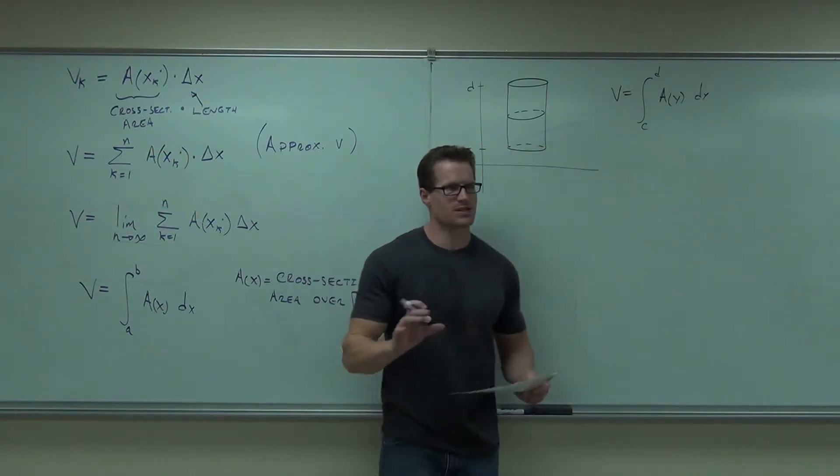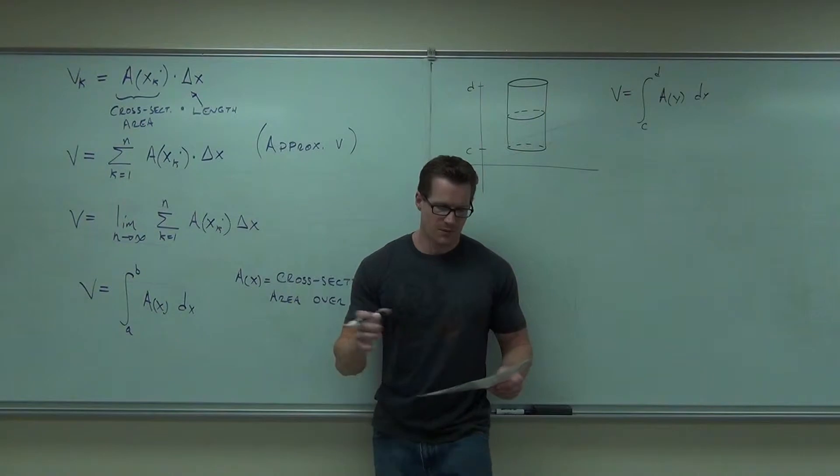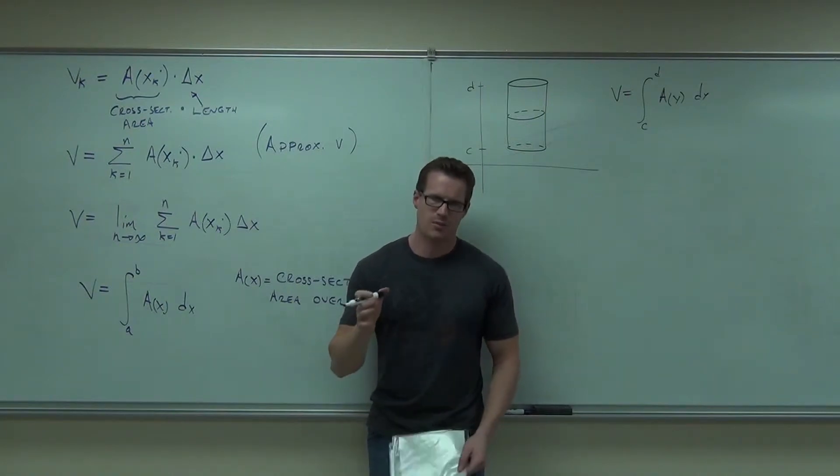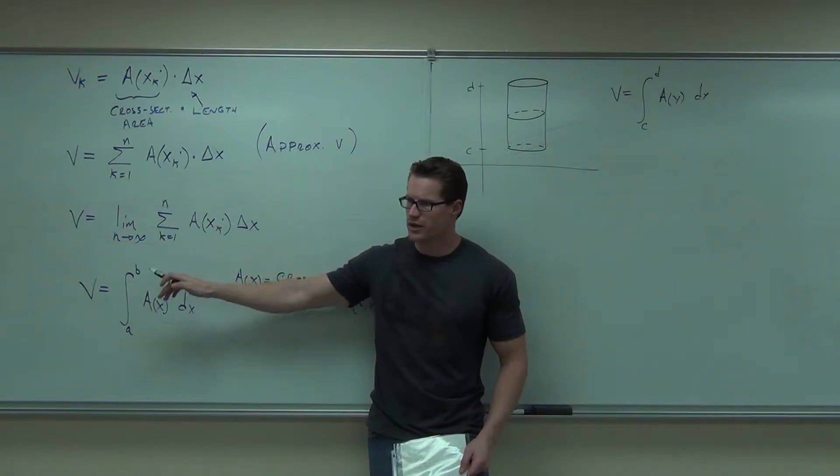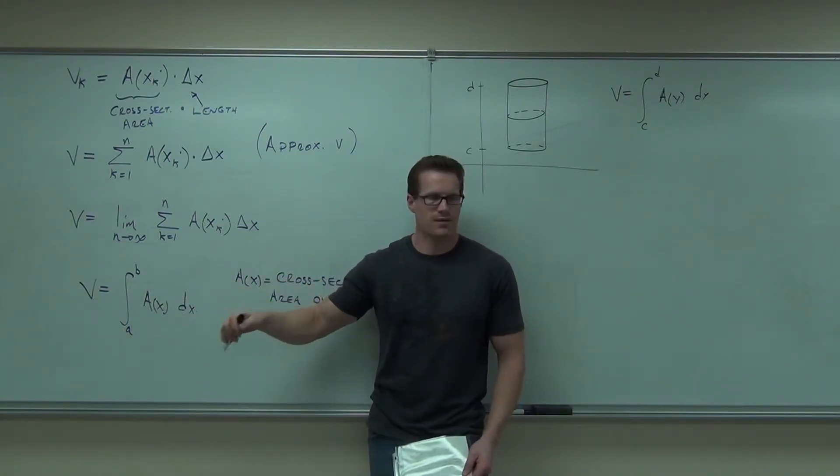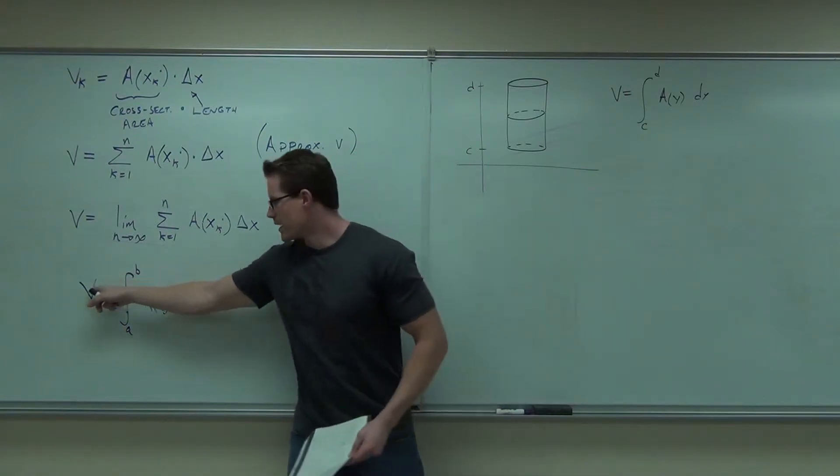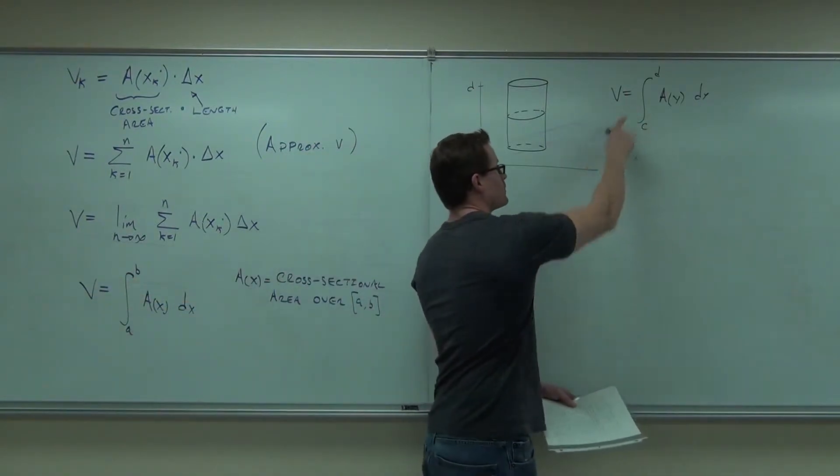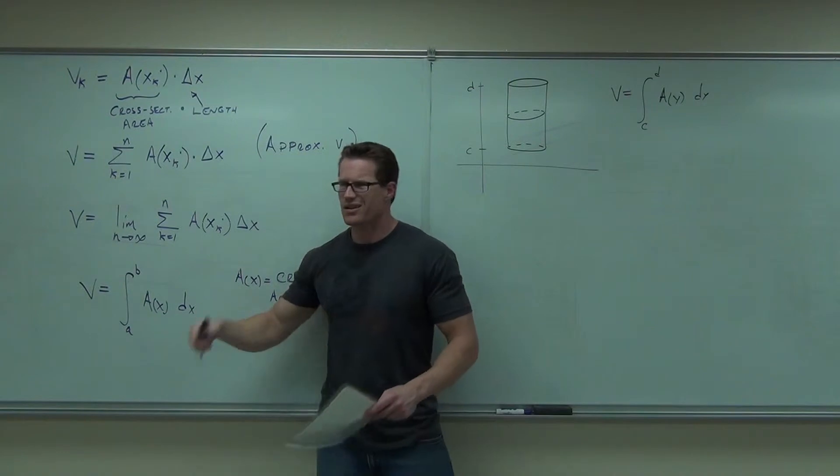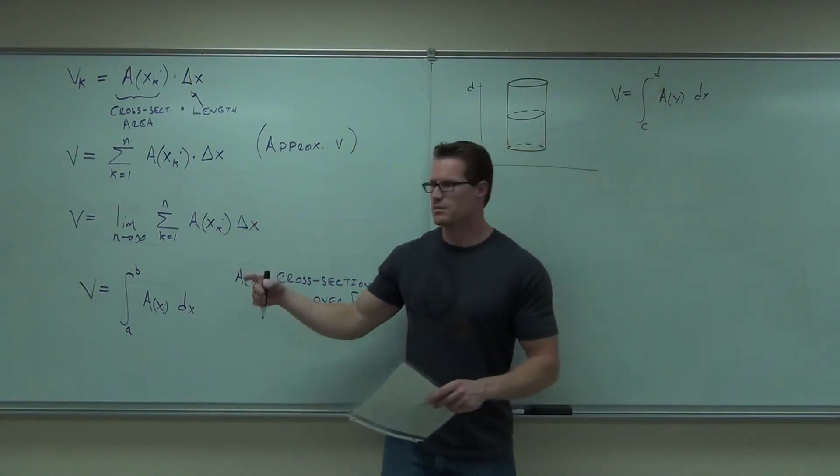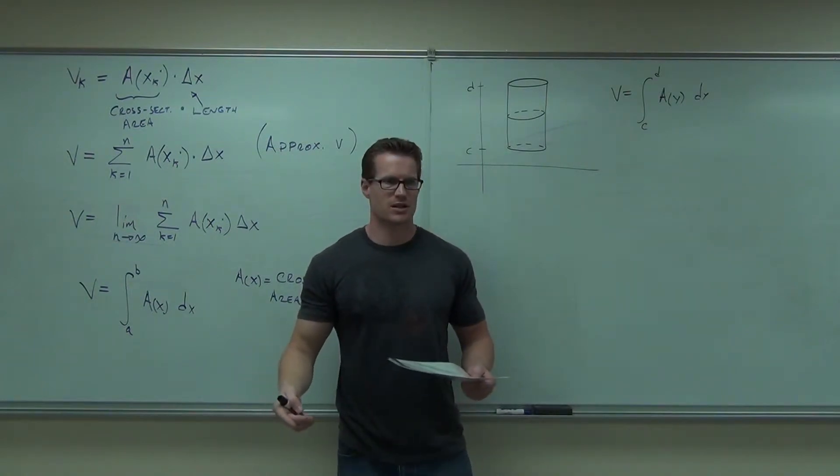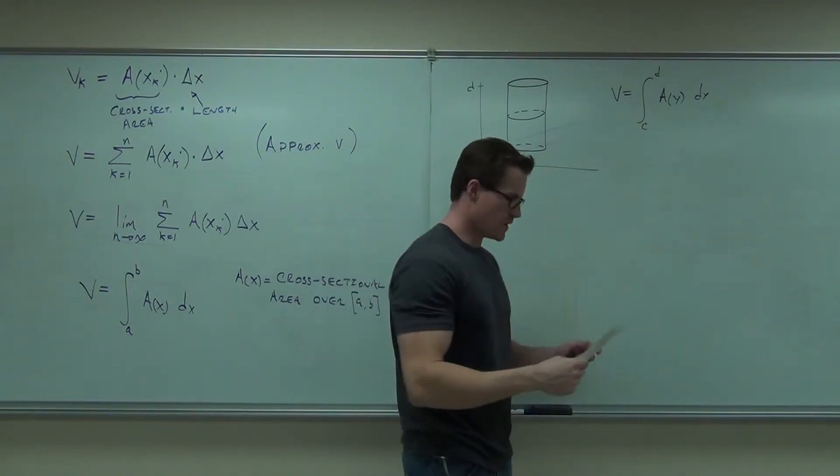So basically what this says in English is the volume of a solid is found by integrating the cross-sectional area from A to B. That's what that says in English. The volume is found by integrating the cross-sectional area, the area of that cross-section, in three-dimensional space, from C to D in this case, or from A to B. Would you like to see an example of how this is done? Yeah. It's kind of cool. It's not too bad.